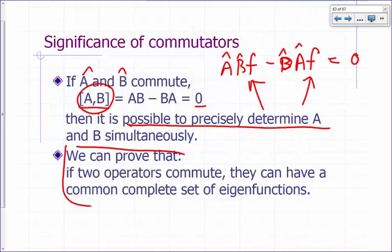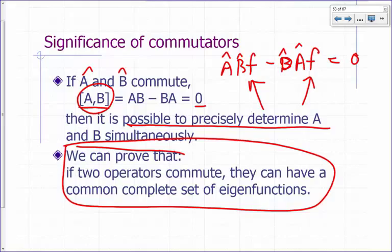The reason for that is: if two operators commute, you can find a common complete set of eigenfunctions for them — eigenfunctions that are eigenfunctions of both a and b. If ψ is an eigenfunction of a, then measuring a gives a definite value. If ψ also happens to be an eigenfunction of b, then measuring b gives a definite value. So if you can find a common complete set of eigenfunctions, it's possible to measure a and b simultaneously and get exact values for both.